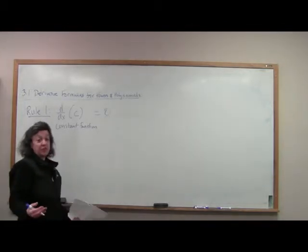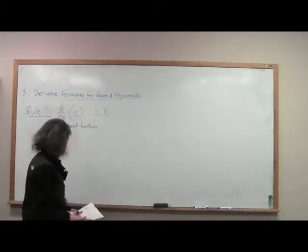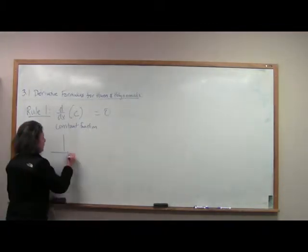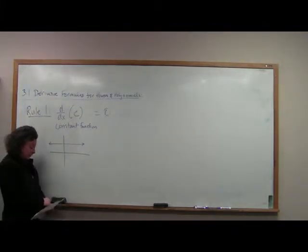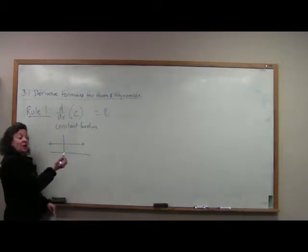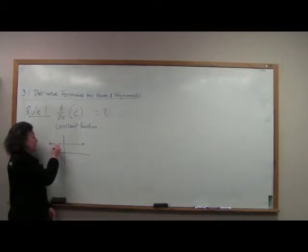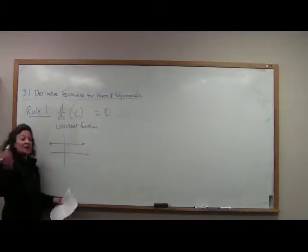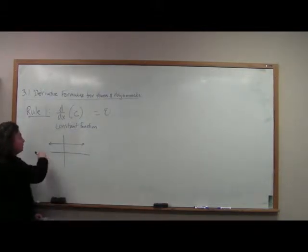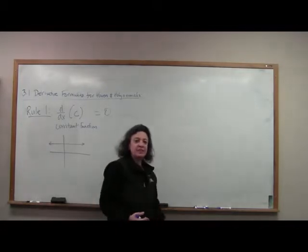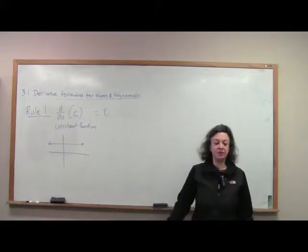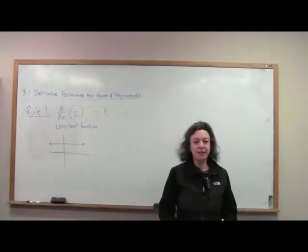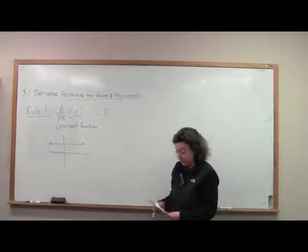We could do this formally using the limit definition, but let's use our intuition. A constant function is essentially a horizontal line. No matter where we are on this line, the slope of the tangent line is always equal to zero. Since the derivative is the slope of the tangent line, the derivative of any constant is zero. So if I ask you the derivative of 1,728, you're going to say zero.